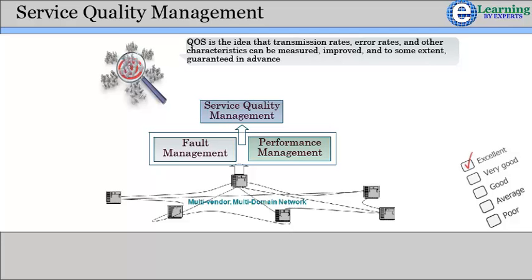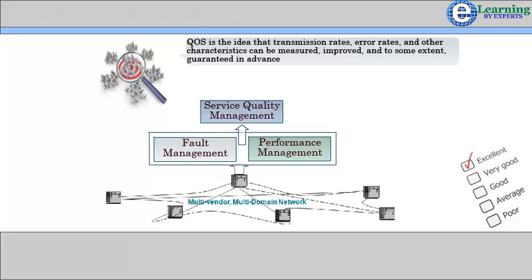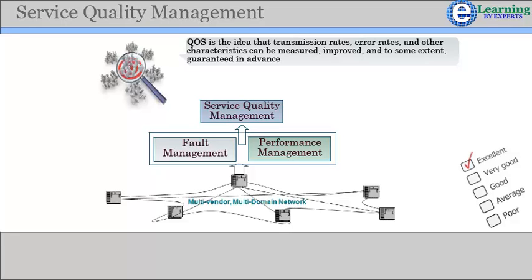The QoS management system helps the service provider to measure the quality of a link or service provided or committed to a customer. One can also set thresholds for performance parameters so that the system can maintain a record of how many times the QoS was violated and how long the QoS was violated.